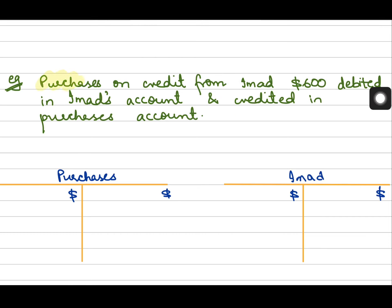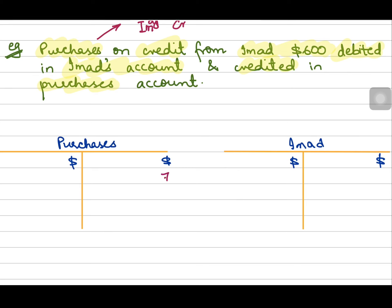Let's understand this through an example. Purchases on credit from Imad — Imad is the supplier. Originally, purchases account should have been debited to show an increase in inventory and Imad's account should have been credited. However, what was done instead: purchases account was credited with 600 and Imad's account was debited. This is an error of reversal — the double entries are completely reversed.